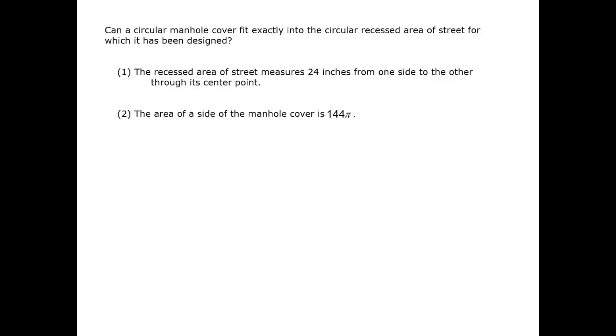In this question, as in many GMAT questions, we get a hint that we can ignore specific details or what you could think of as more sophisticated considerations. For example, the word exactly here is meant to indicate that we're really being asked whether one circle is the size of another circle. We don't need to worry about whether a small envelope of air may be present around the manhole cover, for example, or whether there is friction between the cover and the edge of the recessed area because the fit is quote-unquote exact.